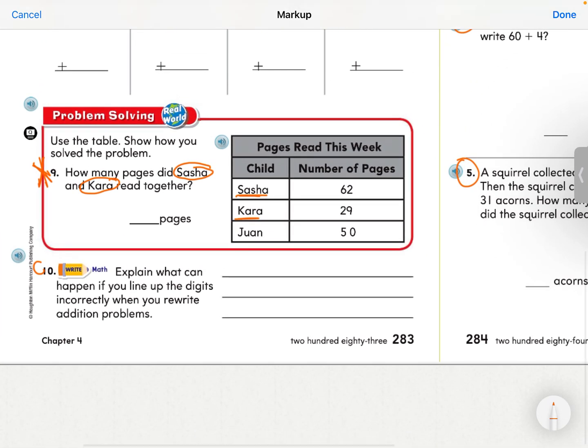Number 10, your challenge problem. Explain what can happen if you line up the digits incorrectly when you rewrite addition problems. When you are rewriting those addition problems to go vertically, what can happen if you don't line up the tens and ones?